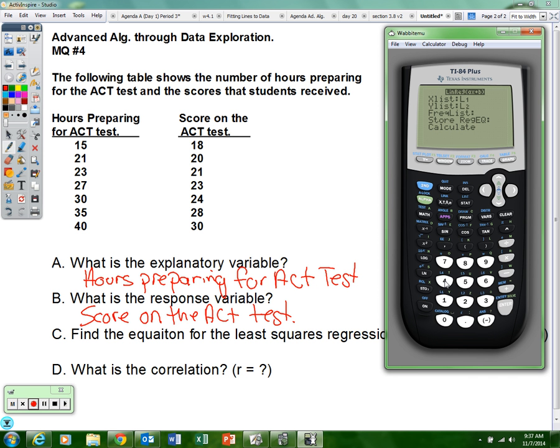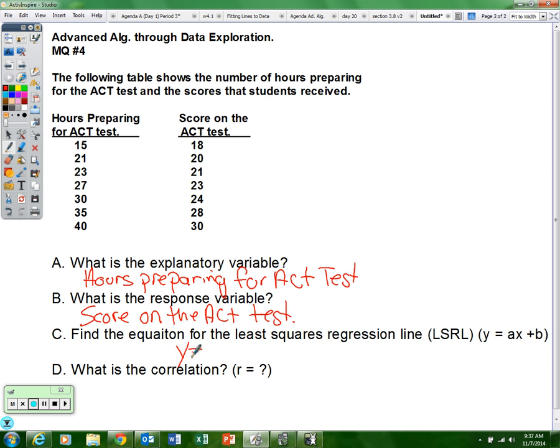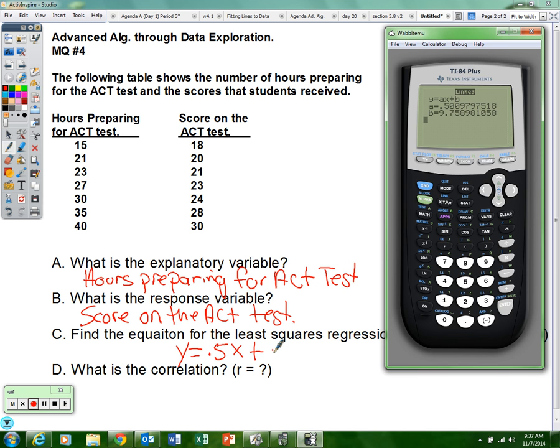I had to hit it several times. And we see that the A is 0.5 and the B is 9.8. So the equation is Y equals 0.5X plus 9.8.